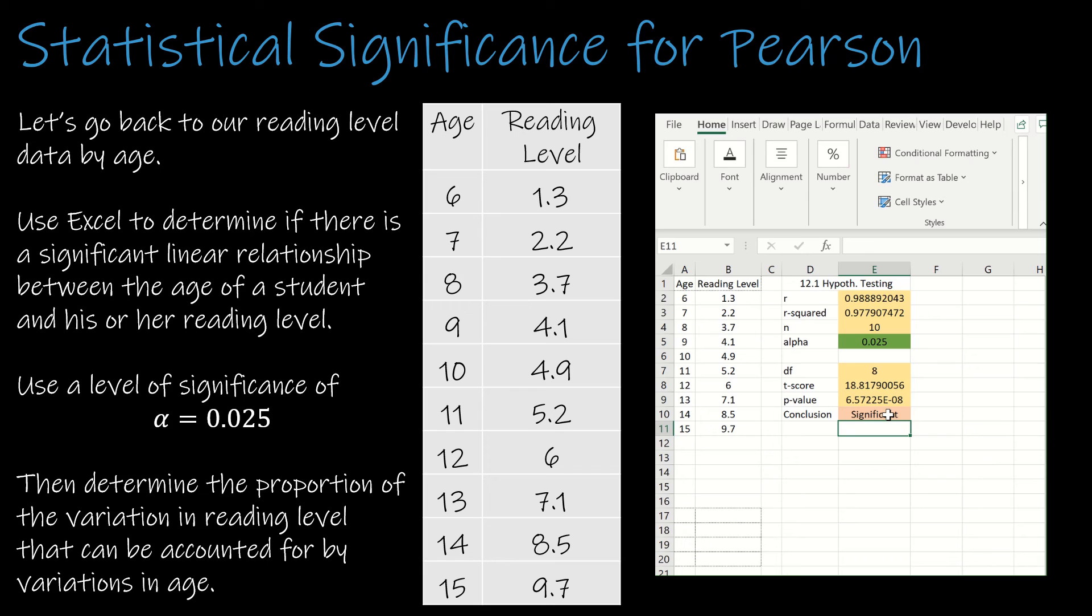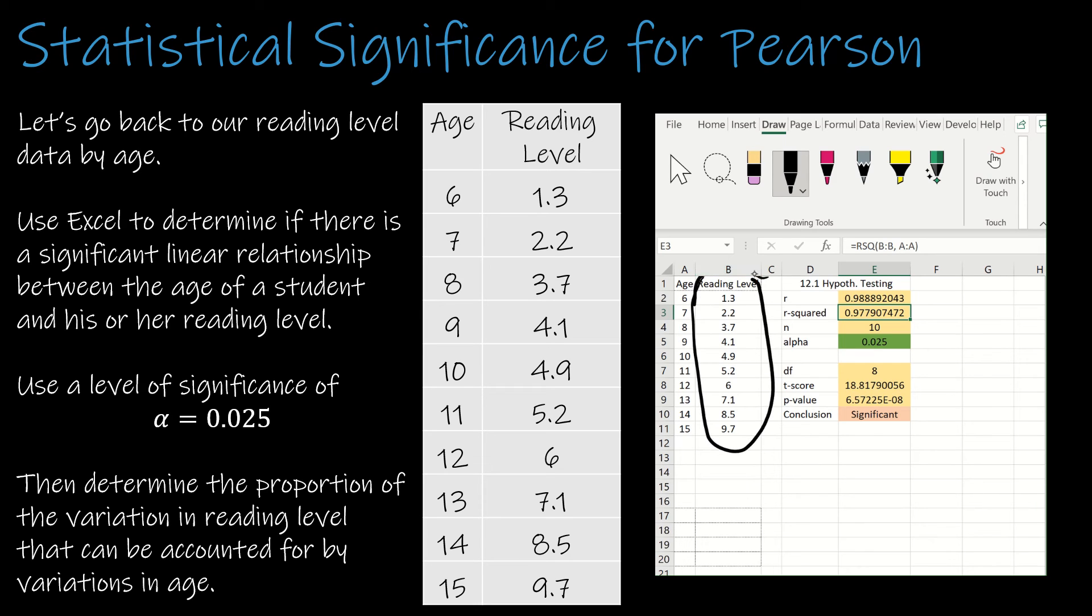We are asked to determine the proportion of variation in the reading level that can be accounted for by variations in age. That's the r-squared value. My r-squared value is 97.8%. So what I'm saying is that 97.8% of changes in reading level, changes in y, are accounted for by changes in age. So that's almost all of the variation is accounted for by changes in age.